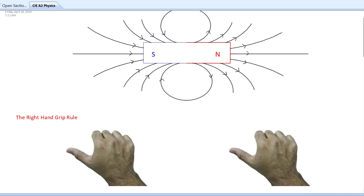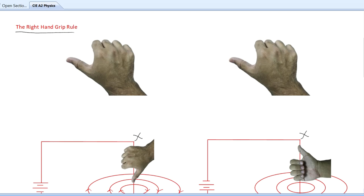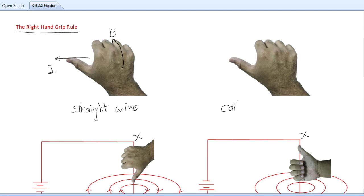If you have a wire carrying a current, it also creates a magnetic field around it. The way to know the direction of that magnetic field is using the right-hand grip rule. For a straight wire, you point your right-hand thumb in the direction of the current and your fingers curl in the direction of the magnetic field B. The magnetic field will be a circular or curved field.